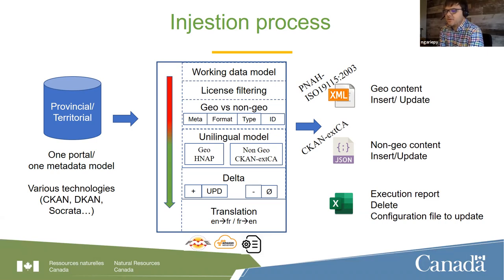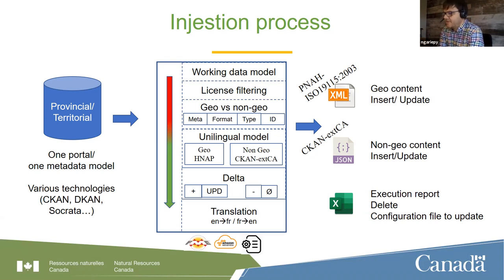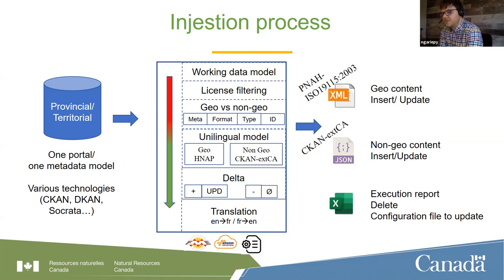Looking deeper in the process: first, we transform all provincial metadata models to a working model. We apply a filter based on the license. After that, we split which data is geo and which is non-geo based on four business rules — through metadata information, file format, attribute types, or manually through IDs.